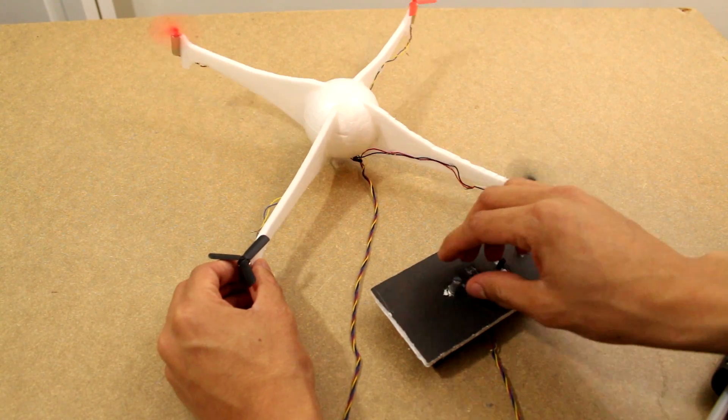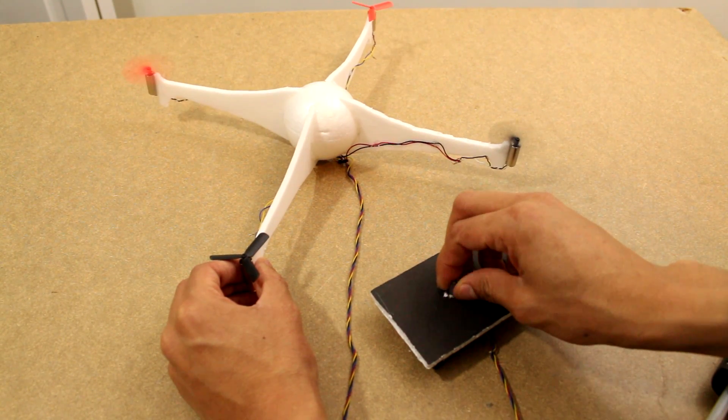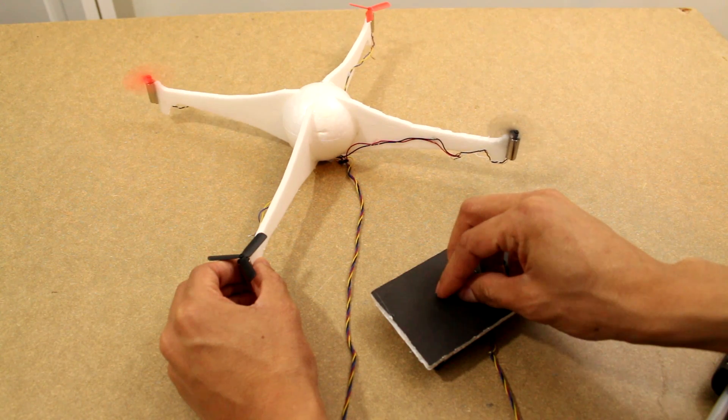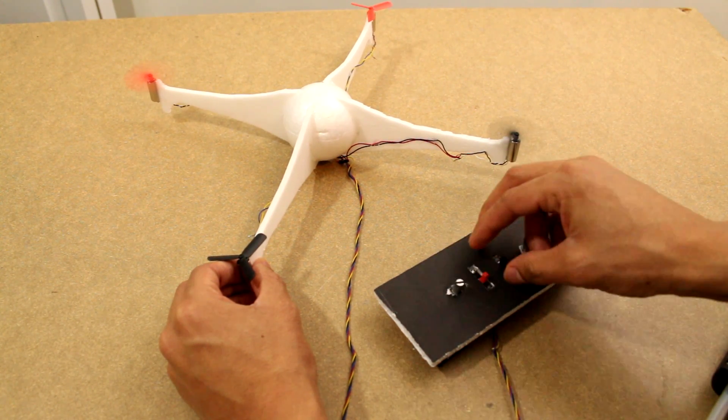As you can see, we can turn on the switch to let one set of motors go on, and then we can use the variable resistor to slow the speed of these motors down a little bit. Now let's go ahead and test it out.